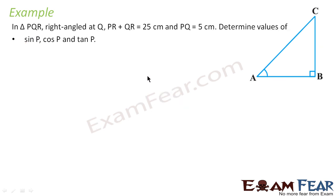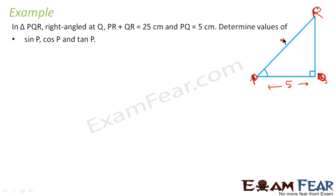The next question says: in triangle PQR, right angle at Q, PR plus QR equals 25 and PQ equals 5. Find the values of sin P, cos P, and tan P. Let us draw triangle PQR with the right angle at Q. PQ equals 5. If we assume PR equals X, then QR equals 25 minus X, because X plus (25 minus X) equals 25 as given.